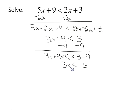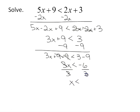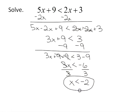Now to solve for x — since this means 3 times x, to undo multiplication I divide by 3. I divide by positive 3 on both sides. 3 over 3 is 1, leaving just x on the left side, and negative 6 over 3 is negative 2. I really didn't do my steps any differently than if there had been an equal sign — I just had less than all the way down.